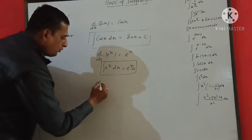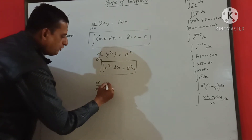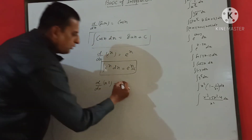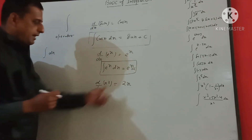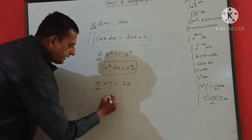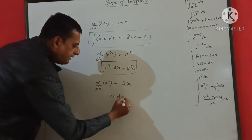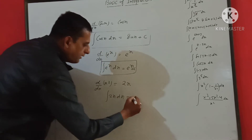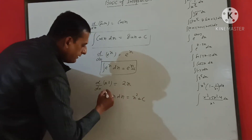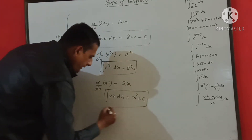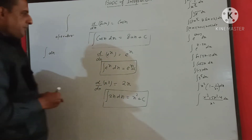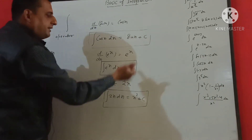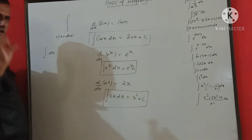Suppose d/dx of x² — if we do differentiation we will get 2x. So if you integrate 2x dx, you will get x² plus C. In every integration question, C is always added.